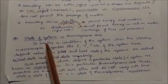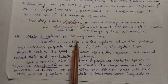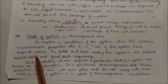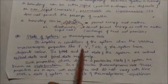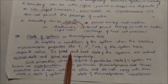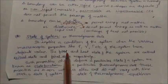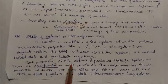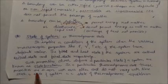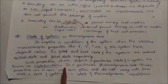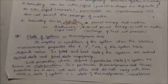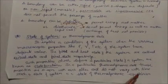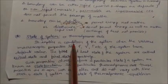The state of a system implies a condition where various macroscopic properties like pressure, volume, and temperature have definite values. The first state of the system is called the initial state and the last state is called the final state. Properties that define a particular state of a system are known as state functions. In a particular thermodynamic state, properties like pressure, volume, and temperature are in equilibrium with each other and do not vary with time — such a state is called a state of thermodynamic equilibrium.